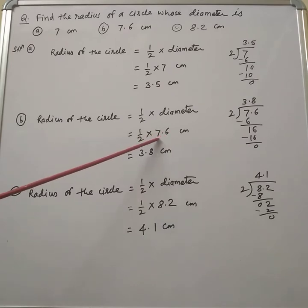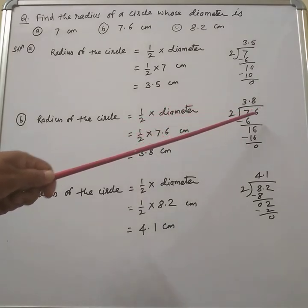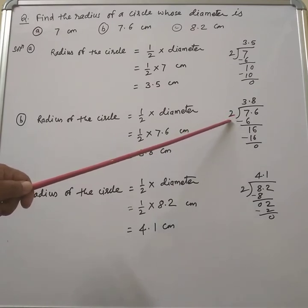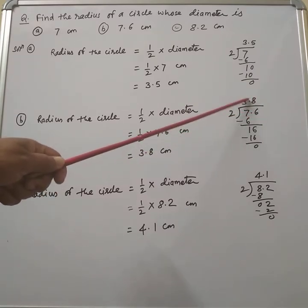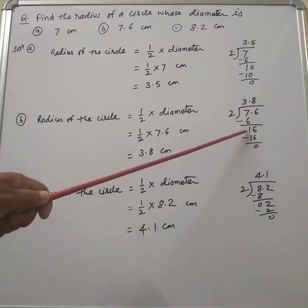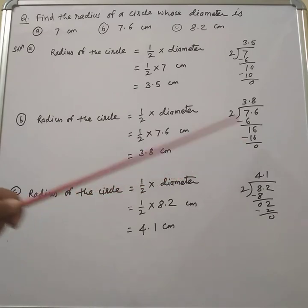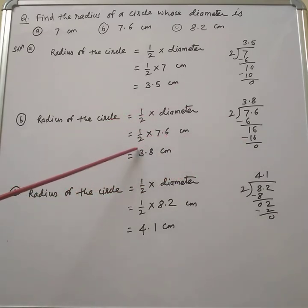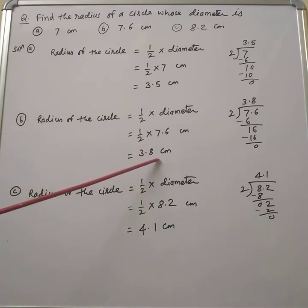Now we have to divide 7.6 by 2. We write 7.6 divided by 2. So 2 times 3 is 6, then the decimal point is placed here, and we bring down 6. Therefore, the radius of the circle is equal to 3.8 centimeters.